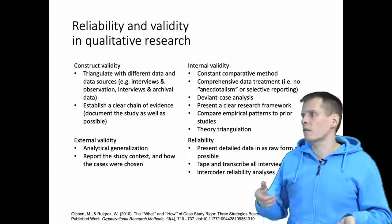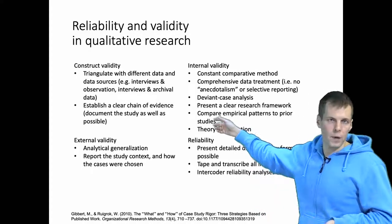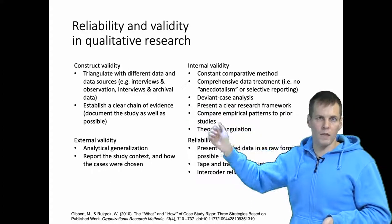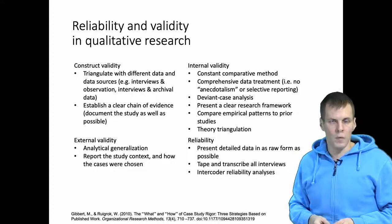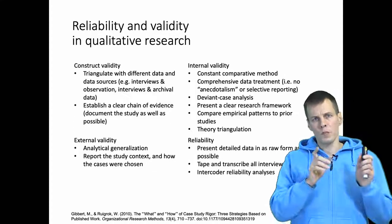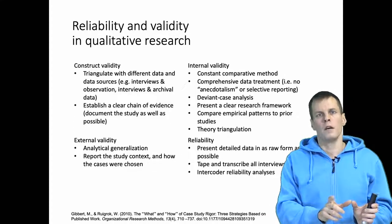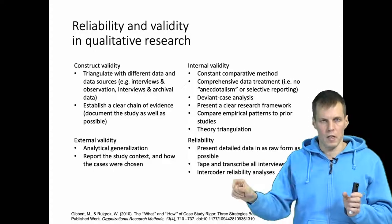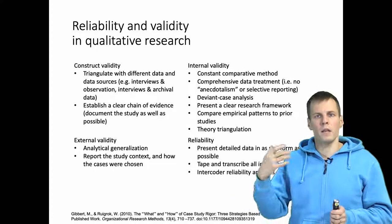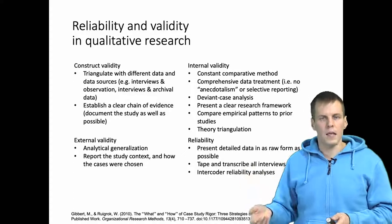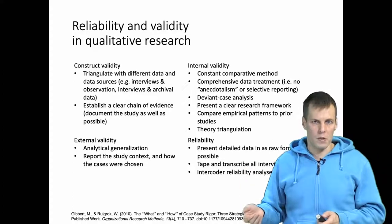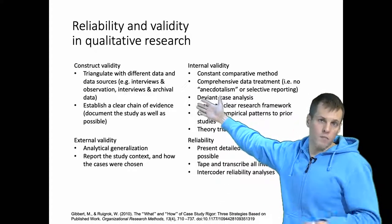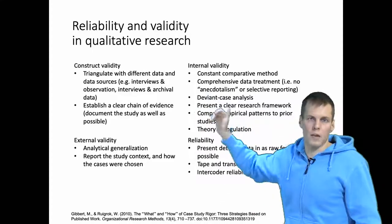The second element of construct validity is establishing a clear chain of evidence — using qualitative data analysis software can help here. You look at specific observations and then show how you infer a general concept from those observations, so people can check whether they agree with your interpretations. If two people agree on the interpretation, that is also considered evidence of construct validity.